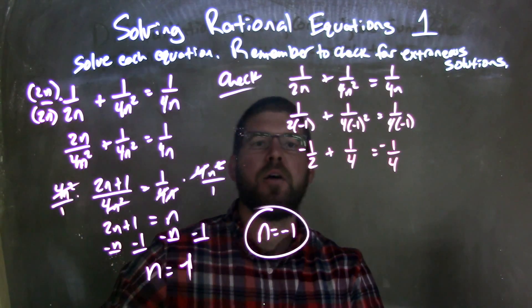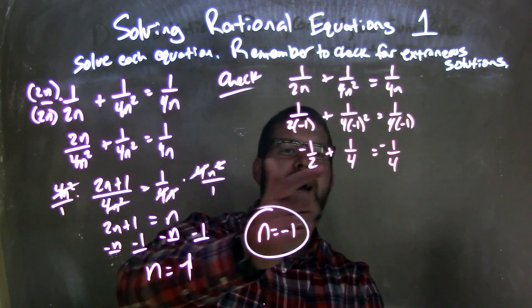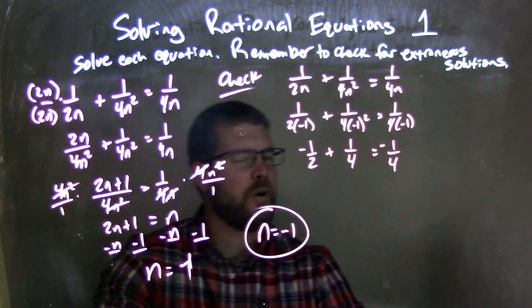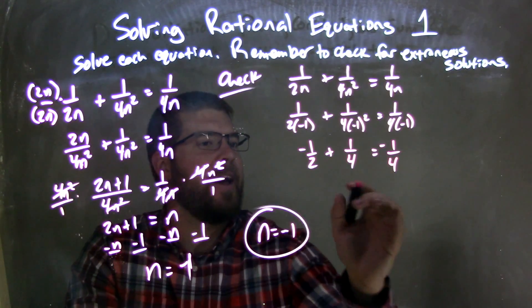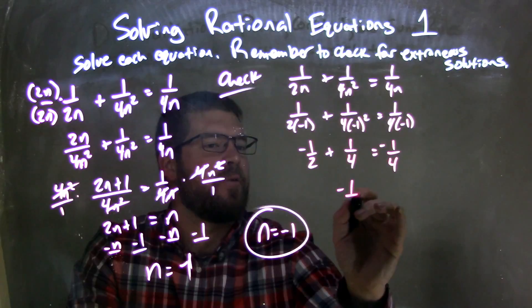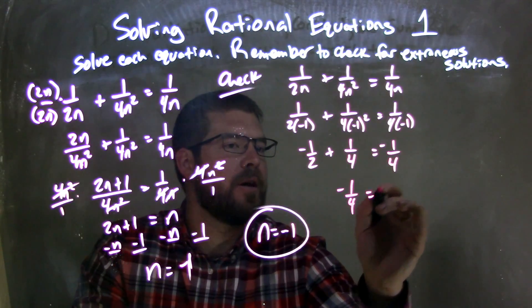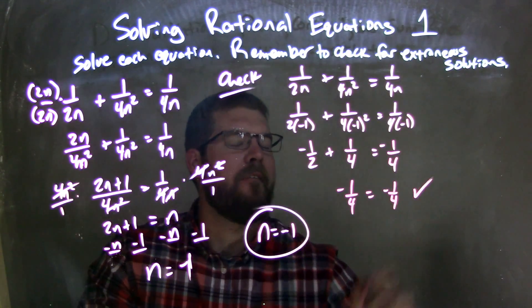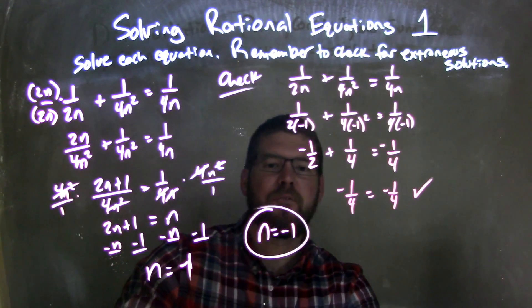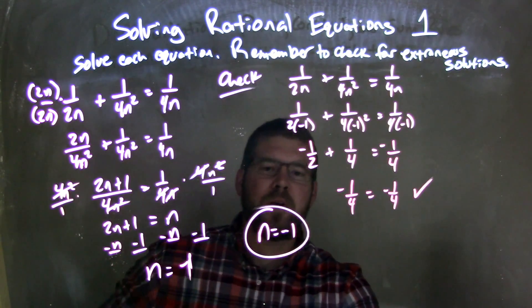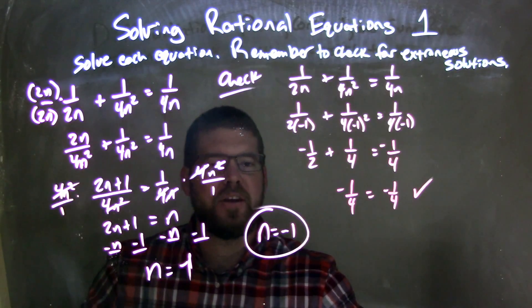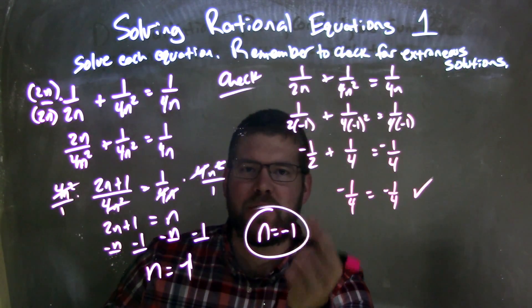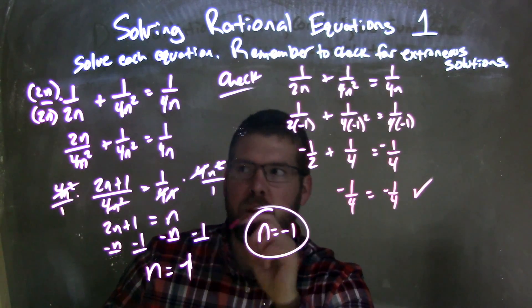So what's negative 1 half plus 1 fourth? That's negative 1 fourth, and the left and right-hand sides are equal. Fantastic — confirming that we don't have an extraneous solution, and n equals negative 1 is our final answer.